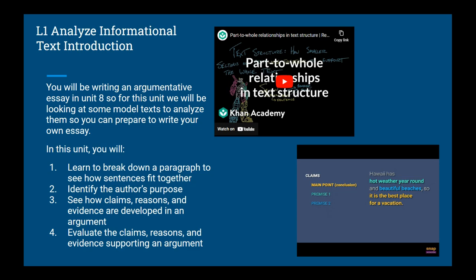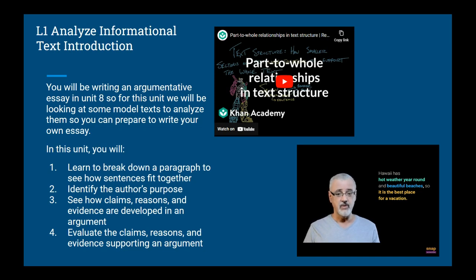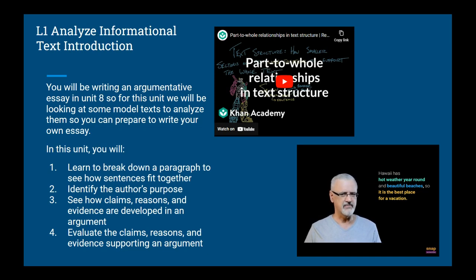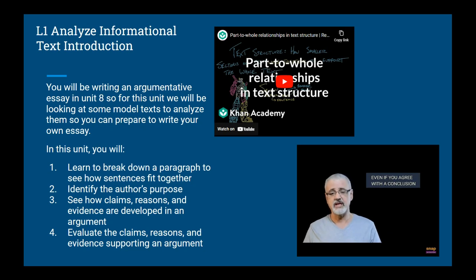Let's see how well this argument works. What supports the point that Hawaii is the best place for a vacation? One premise is that it's hot there year-round — but what if you don't like hot weather, or you'd rather go skiing? The other premise is that Hawaii has beautiful beaches — but how do you define beautiful, and aren't there other places in the world with beautiful beaches? We're not trying to prove or disprove that Hawaii is great; we're simply analyzing the argument. Even if you agree Hawaii is a great vacation spot, you may decide this argument doesn't make a good case for it.